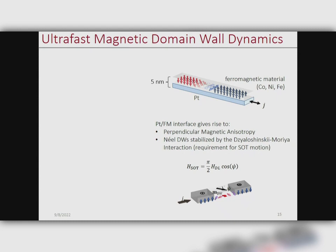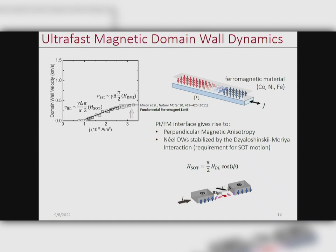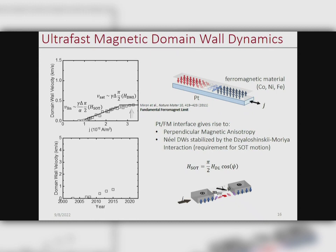The strength of the torque is actually proportional to the Néel component of the domain wall, so without a Néel domain wall you can't drive it with a spin-orbit torque. This system works pretty well — you can drive domain walls to a few hundred meters per second, which seems pretty fast. But what we've learned over the years is that there's a plateau or saturation of the velocity at high current densities. This is actually fundamental to ferromagnetic systems and depends on the strength of the DMI in your material.